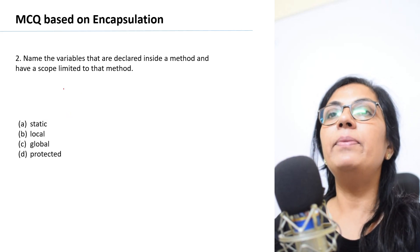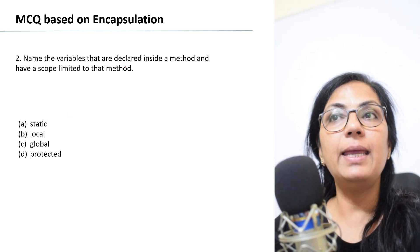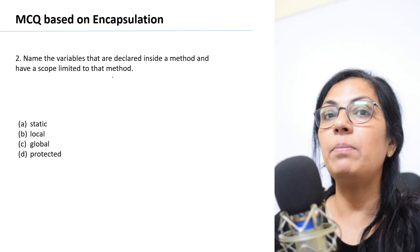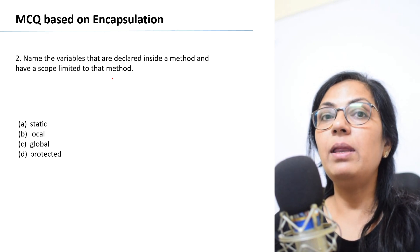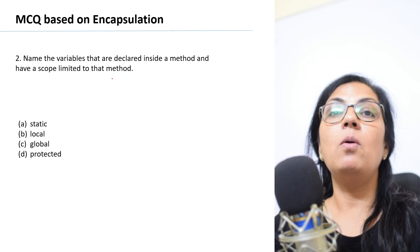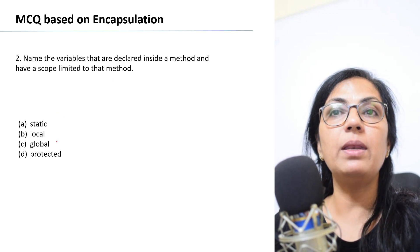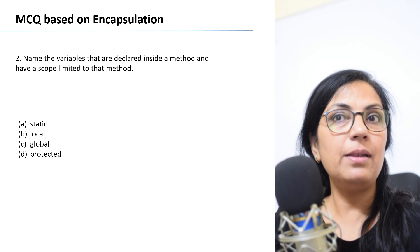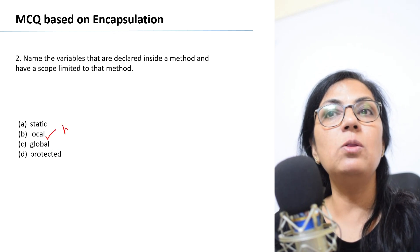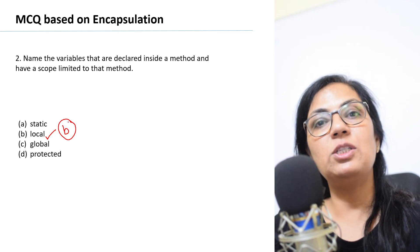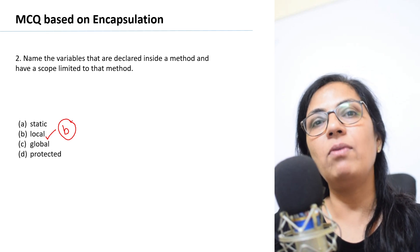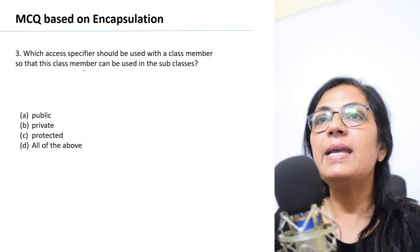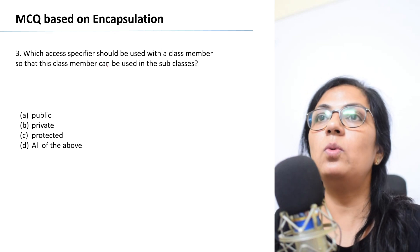Question number two: Name the variables that are declared inside a method and have a scope limited to that method only. The variables which are declared within the method body — are those static variables, local variables, global variables, or protected variables? The correct answer is local variables. Please do remember such types of questions — these are very important.